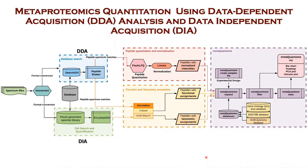This is the flowchart of the DIA and DDA analysis that we performed via Galaxy. In the DDA search, we used SearchGUI and PeptideShaker to perform database search, and FlashLFQ for quantitation. In DIA, we used PROSIT-based spectral library and Encyclopedia to quantify and identify peptides. Both DIA and DDA peptides were subjected to Unipept and LAST P for functional and taxonomic annotation. Finally, MetaQuantum enabled quantitative and statistical analysis and visualization of functional and taxonomic expression.